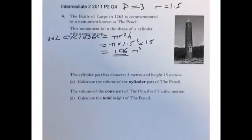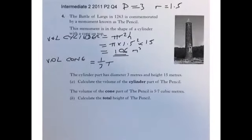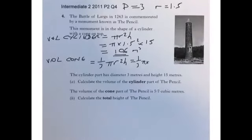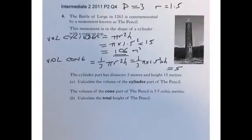Now we work out the volume of the cone. That's given by the formula one third pi r squared h. If we plug in the numbers: one third times pi, and the radius in this case is 1.5, so 1.5 squared times h. And we know that that equals 5.7, because we've been told that.